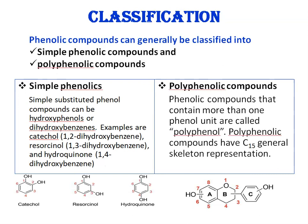Phenolic compounds can be classified into two types: simple phenolic compounds and polyphenolic compounds. Simple substituted phenolic compounds can be hydroxyphenols or dihydroxybenzenes. Examples include catechol, resorcinol, and hydroquinones — these are examples of simple phenolic compounds.